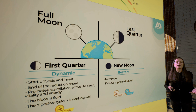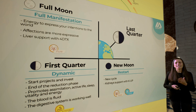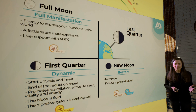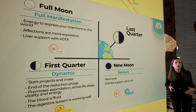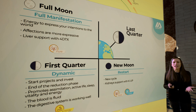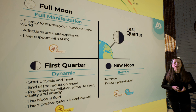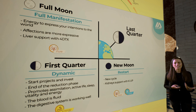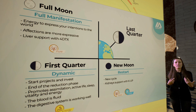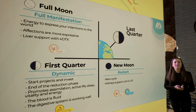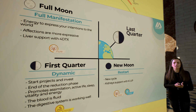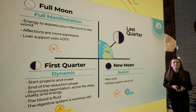The full moon is the climax — it's the maximum peak that we reach. It's the ideal period for full manifestation; it's the period when we have everything in our hands. We are kings. We have the energy to express our intentions to the world, and our affections are more expressive. As the past journey has been very demanding, it is time to give liver support through supplements or frequencies like the Pure of the Gold Cycle again.